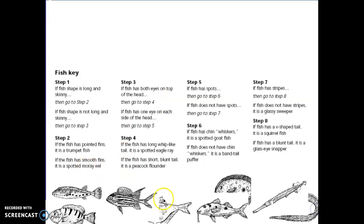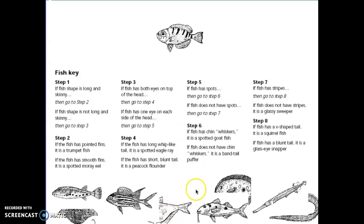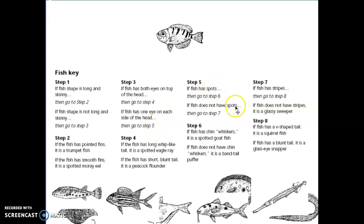Let's do this next one. He doesn't look as common. Is he long and skinny or not long and skinny? Definitely, compared to the eel, he is not long and skinny, so I'm going to go to step three. Does he have both eyes on top of his head, or is there one eye on each side? I only see one eye, and logic tells me there's an eye on the other side. So I'm going to go to step five. Does he have spots or no spots? I see stripes but no spots, so I'm going to go to step seven.